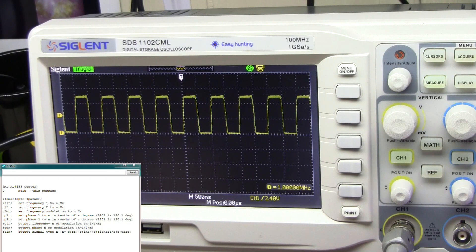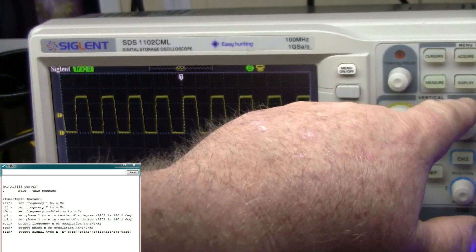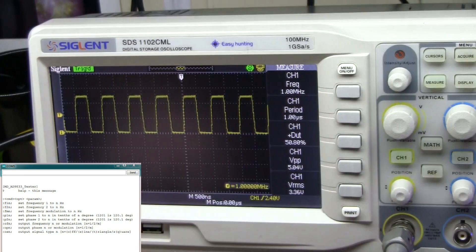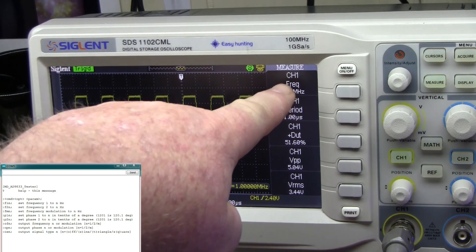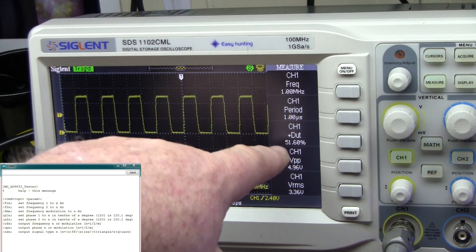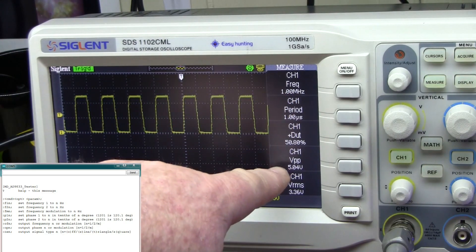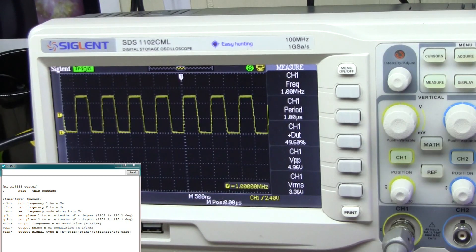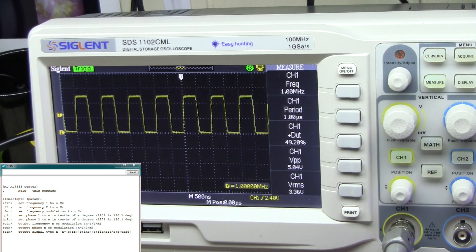So just so you know what you're looking at, I'm going to turn on the measurements, and you can see we have our frequency, our period, our duty cycle, volts peak to peak, and volts RMS. So working pretty good with the square wave.